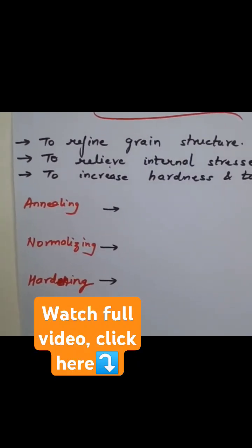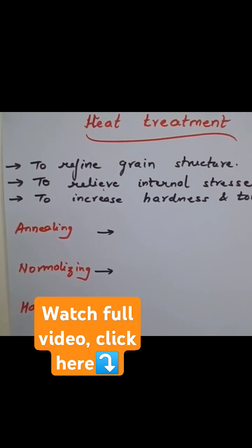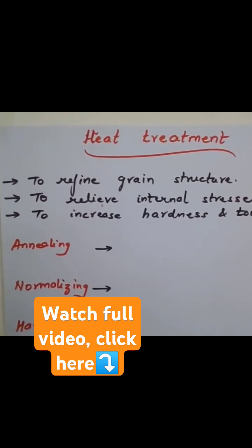There are different types of heat treatment processes: annealing, normalizing, and hardening. Annealing is the process in which the component that is to be heat treated is placed in the furnace itself.